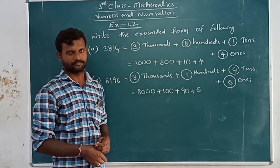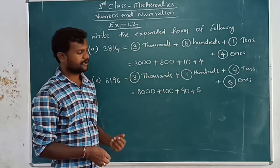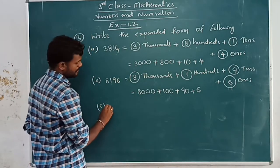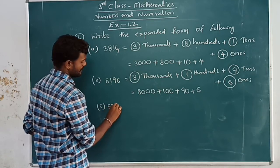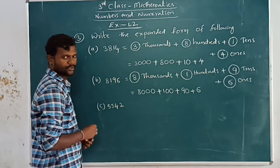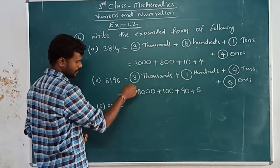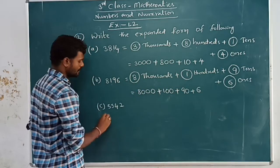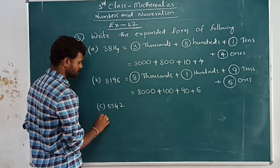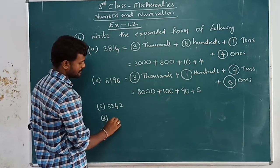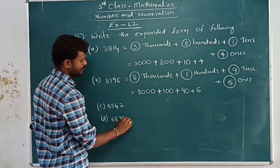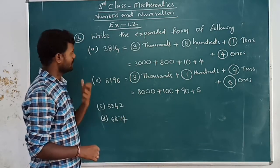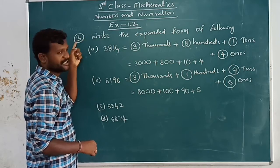Next, similarly do C and D in the same way. C is five thousand three hundred and forty-two. D is six thousand eight hundred and seventy-four. Solve these problems. Exercise 1.2, third bit: write the expanded form of the following.